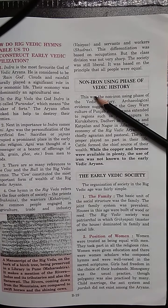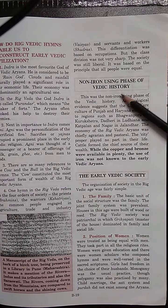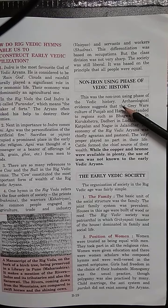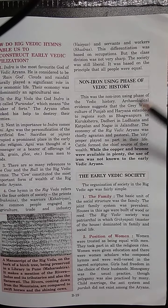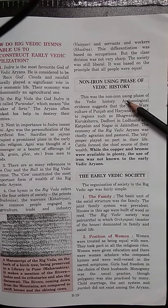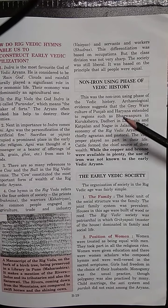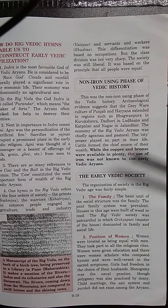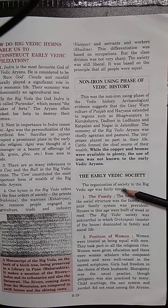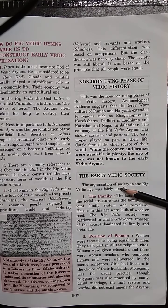The early Vedic time period was a non-iron-using phase, because there is no reference to iron in the Vedas — that is the early Vedic society.